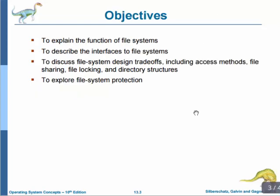At the end of this chapter, you will be able to explain the function of file systems, describe the interfaces to file systems, discuss file system design trade-offs including access methods, file sharing, file locking and directory structures. Finally, you will be able to explore file system protection.